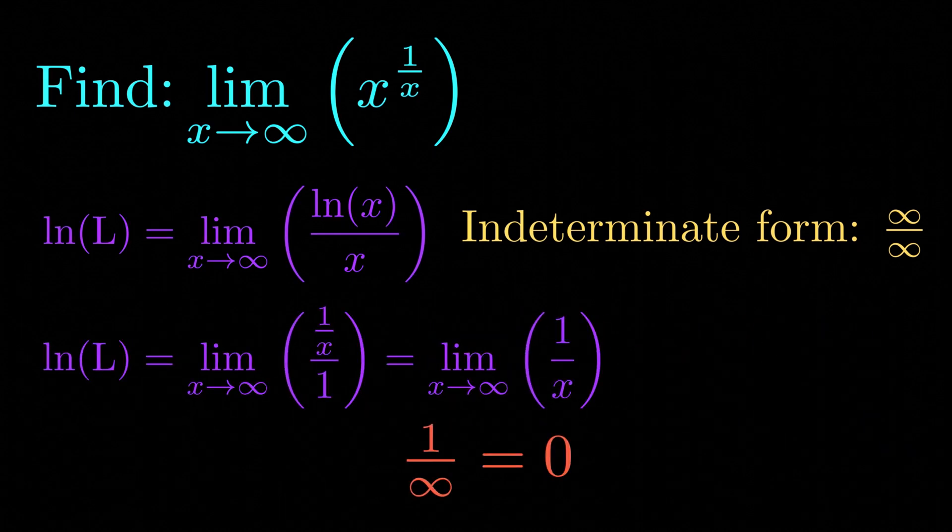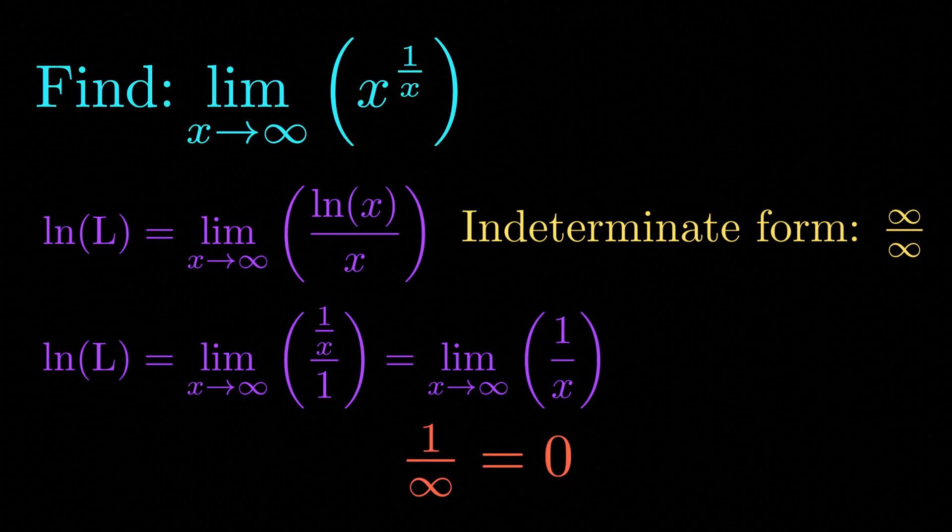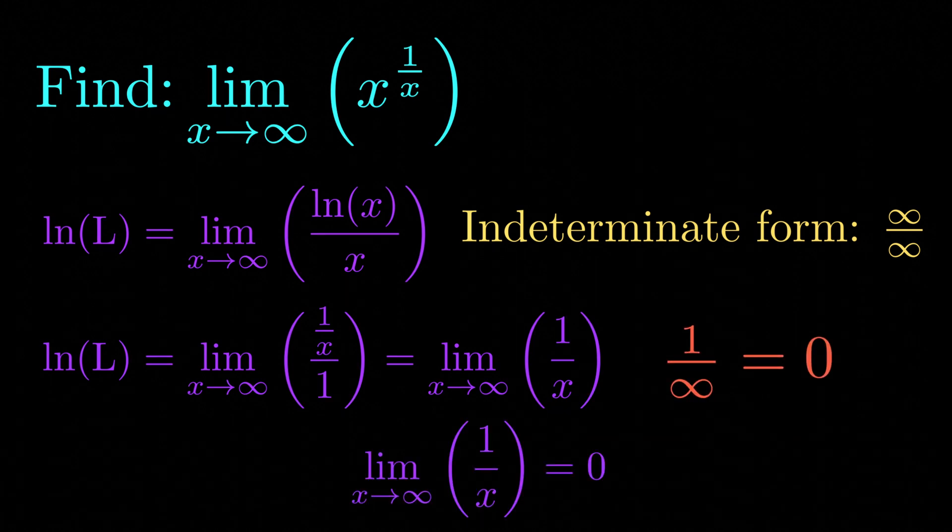Now for our purposes we'll say that 1 over infinity is equal to 0. So we have the limit as x approaches infinity of 1 over x is equal to 0.